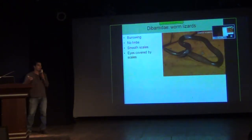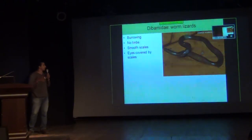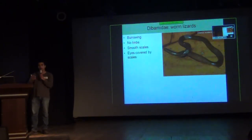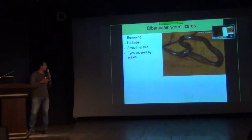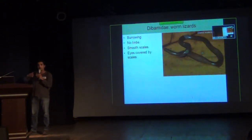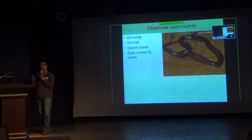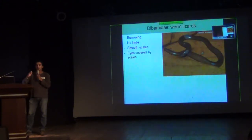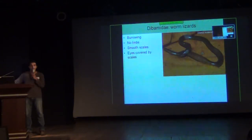Another limbless group is Dibamidae. You are not likely to come across one of these because they are only found in the Nicobar Islands, and you would have to be digging through leaf litter in the forest to find one. Very interesting species — the bones are all fused together to form a shovel for digging into the ground. The eyes are also covered by scales, which is typical in many burrowing taxa. There are many species in Southeast Asia, but only this one occurrence in the Nicobar Islands.